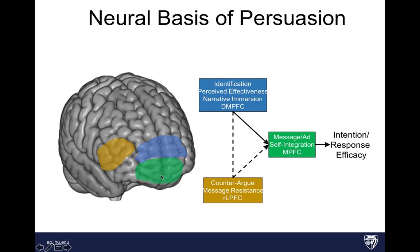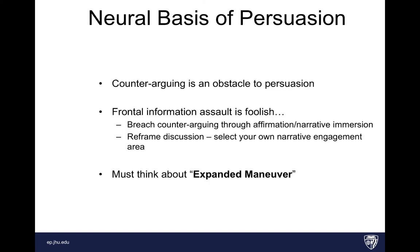The counter-arguing area of the brain is inversely correlated with activity in the dorsal medial prefrontal cortex — as counter-arguing activates, it disrupts your ability to process the message. If you can disrupt the counter-arguing area, you can get a better messaging effect. As we tell stories and activate the blue area of the brain that pays attention to stories, it's much easier for people to incorporate that into their world view and have genuine change. Counter-arguing is the key obstacle to persuasion.